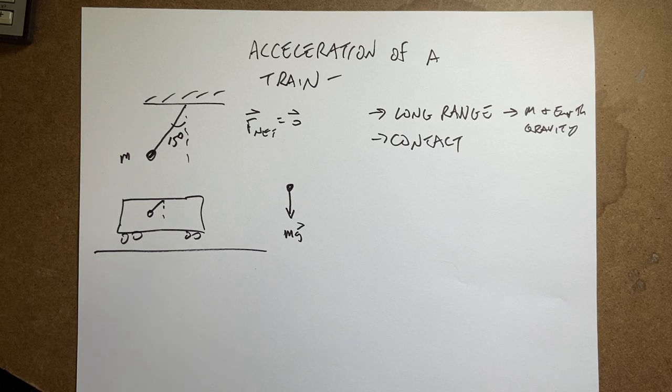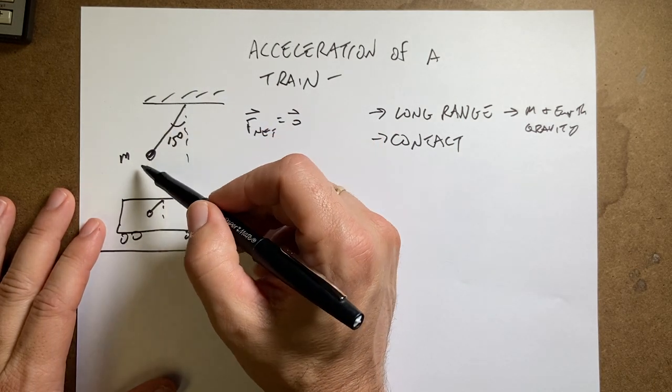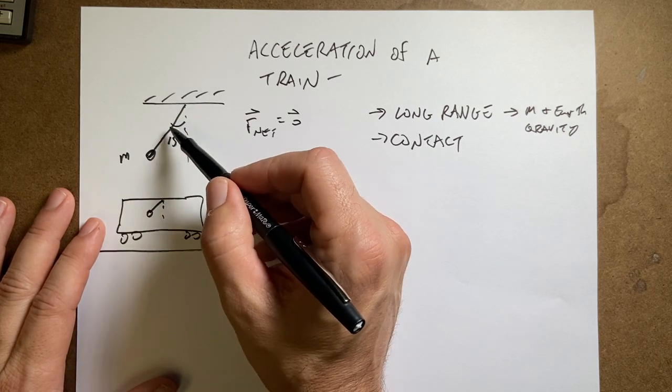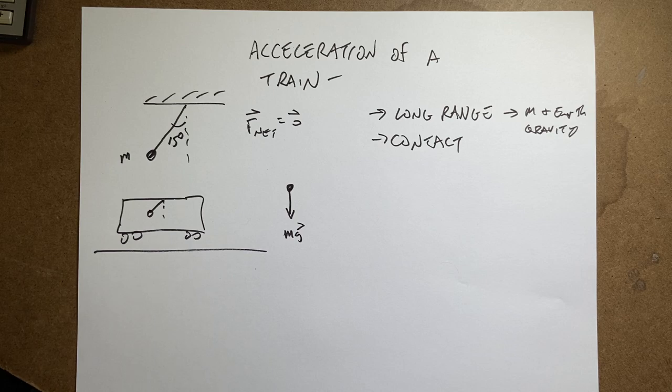And there's no windows, you can't see outside. But you look and you see that there is this thing hanging from the ceiling and it swings back at a 15 degree angle from the vertical. And the question is, can we calculate the acceleration of the train? And the answer is yes, we can.